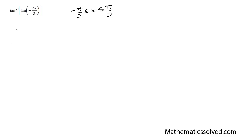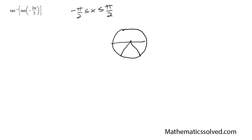This means I'm going to have a problem here because negative 2π/3 — dividing up into thirds, there's negative π/3 and here's negative 2π/3 — is out of my bounds for tangent, which is negative π/2 to π/2.